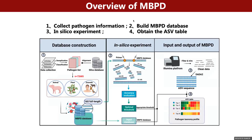Taking bacteria as the object, we collect the information of pathogen species, construct a pathogen database named the MBPD database, evaluate the performance of each variable region of 16S through an encyclopedic experiment, and finally obtain the ASV table with pathogen taxonomy.